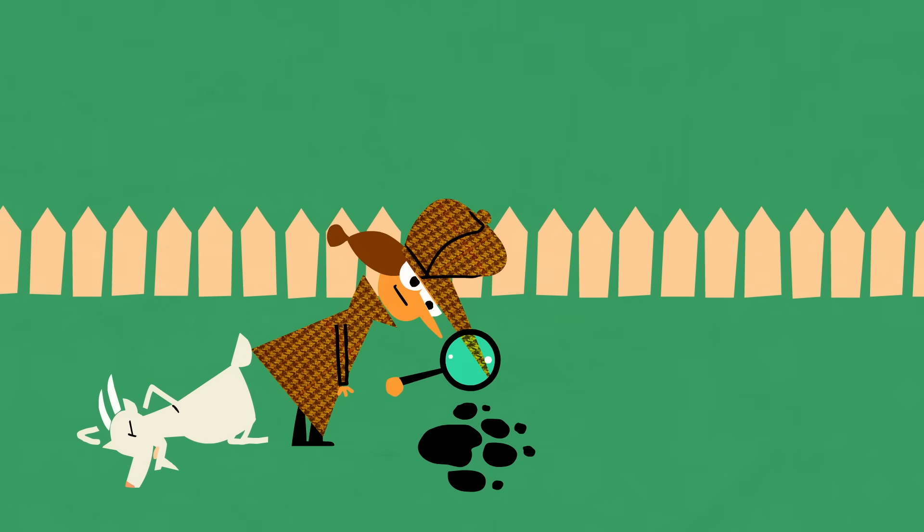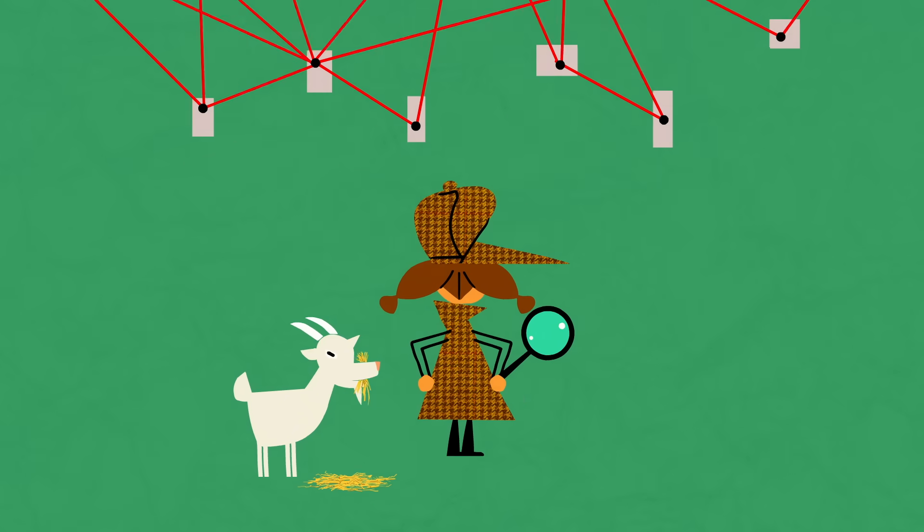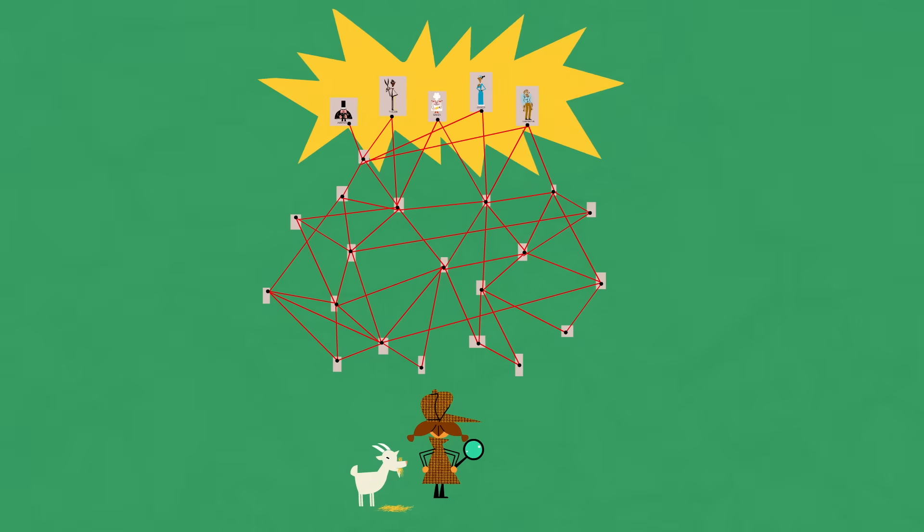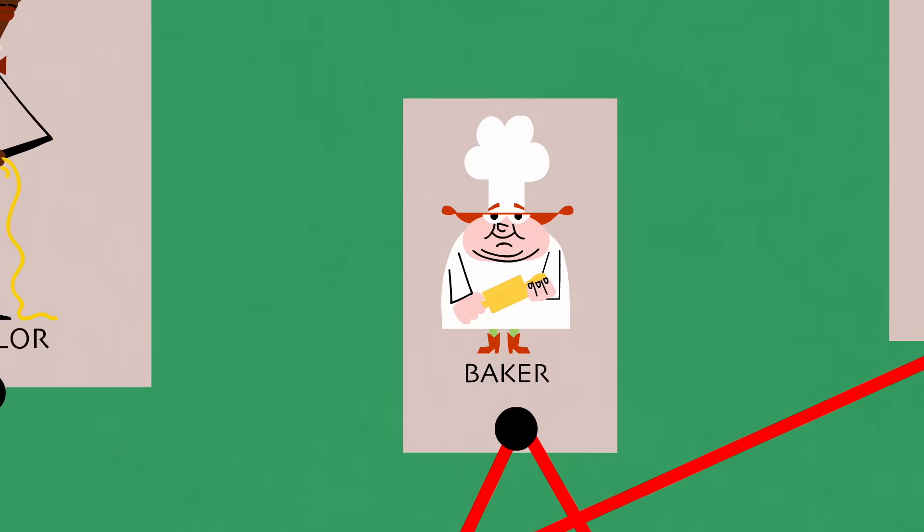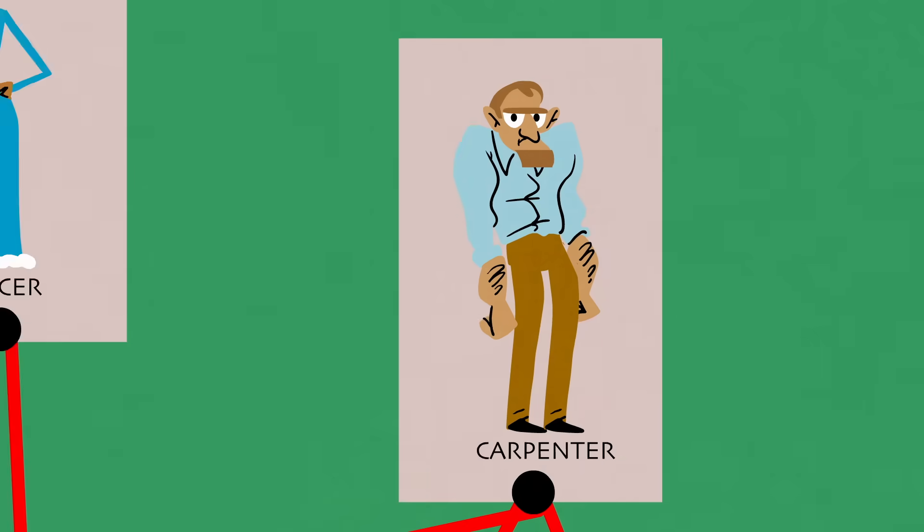You're on the trail of a werewolf that's been terrorizing your town. After months of detective work, you've narrowed your suspects to one of five people—the mayor, the tailor, the baker, the grocer, or the carpenter.